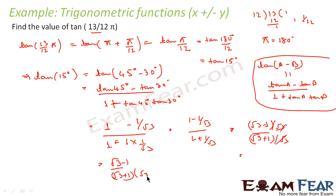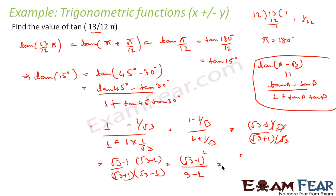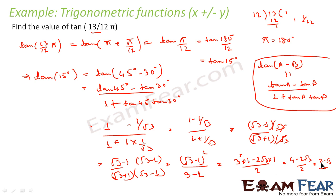We can rationalize this by multiplying numerator and denominator by (√3 − 1). The numerator becomes (√3 − 1)², and the denominator is (√3)² − 1² = 3 − 1 = 2. Expanding: (√3 − 1)² = 3 + 1 − 2√3 = 4 − 2√3. So we get (4 − 2√3) / 2 = 2 − √3. That is the value of tan 15°, and therefore tan(13π/12) = 2 − √3.